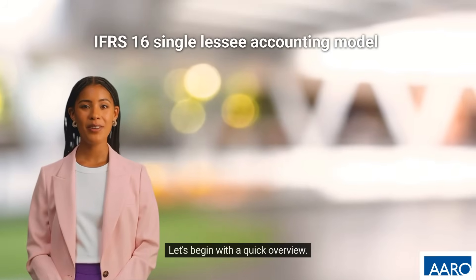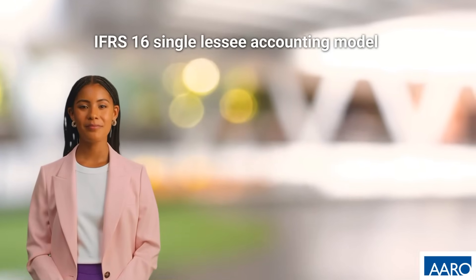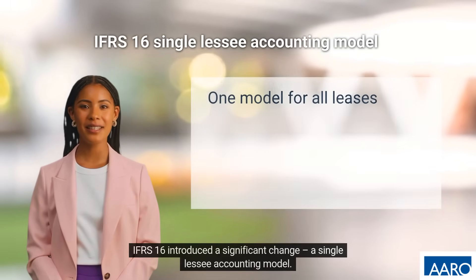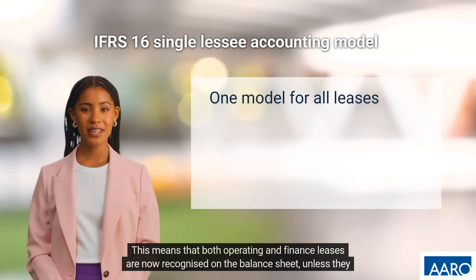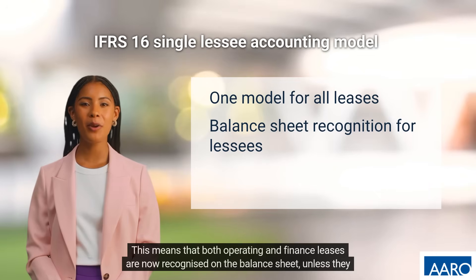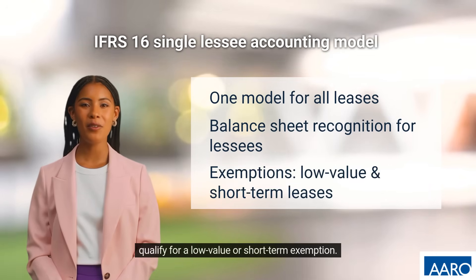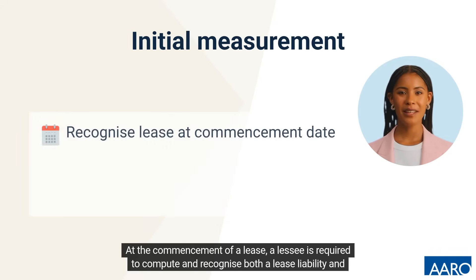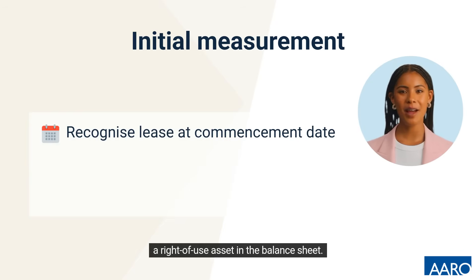Let's begin with a quick overview. IFRS 16 introduced a significant change: a single lessee accounting model. This means that both operating and finance leases are now recognised on the balance sheet, unless they qualify for a low-value or short-term exemption. At the commencement of a lease, a lessee is required to compute and recognise both a lease liability and a right-of-use asset in the balance sheet.